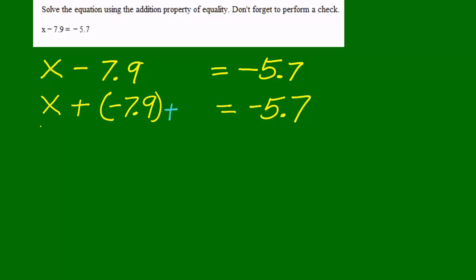Now, to clear out negative 7.9 and get x by itself, I'm going to add the opposite of negative 7.9, which is positive 7.9, to both sides of the equation.